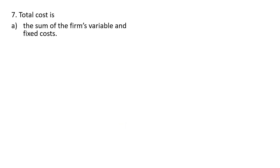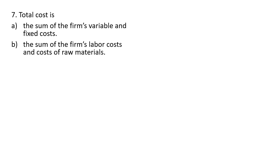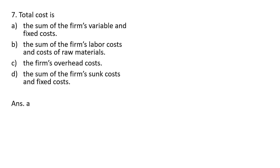Question seven: total cost is A, the sum of the firm's variable and fixed cost — that is correct. The rest of these answer choices are incorrect. So question seven, answer A.